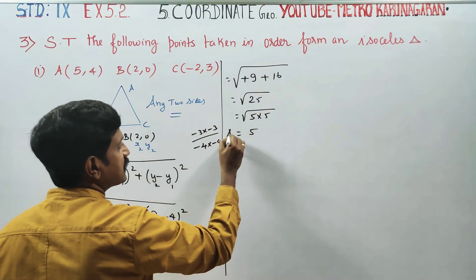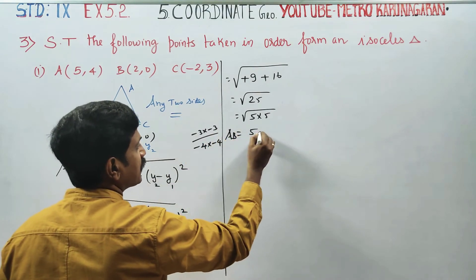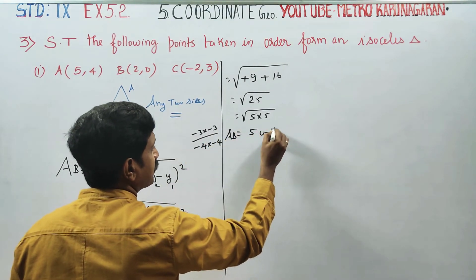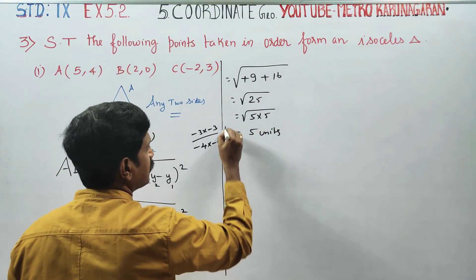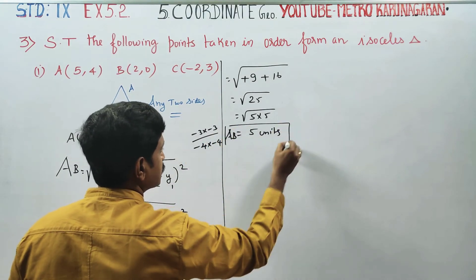Then root of 25. 25 is 5 into 5, so the answer is 5. Therefore AB is equal to 5 units.